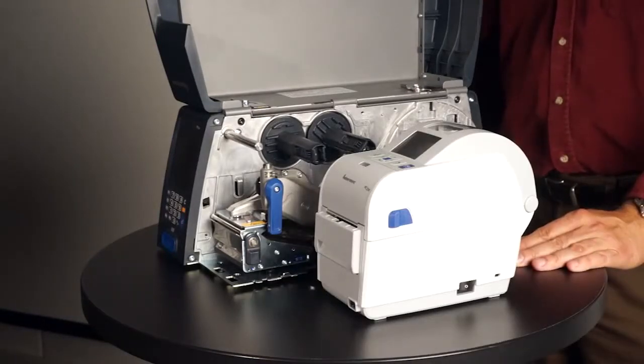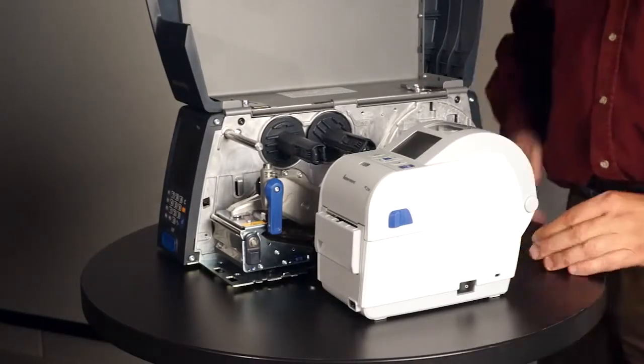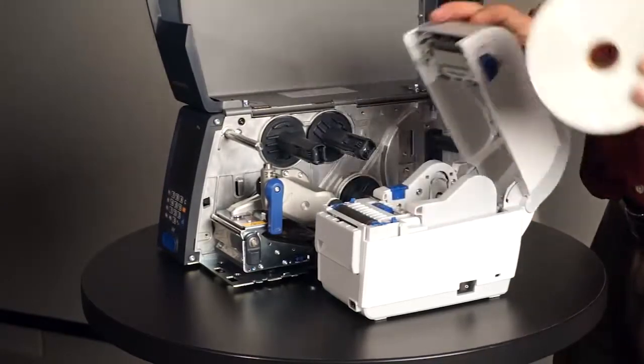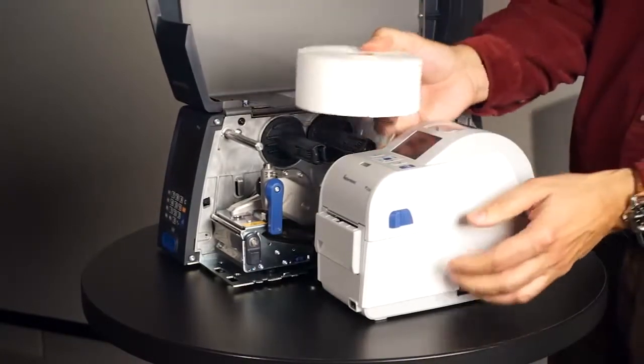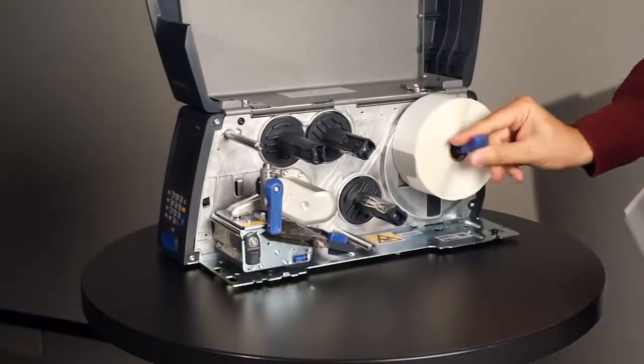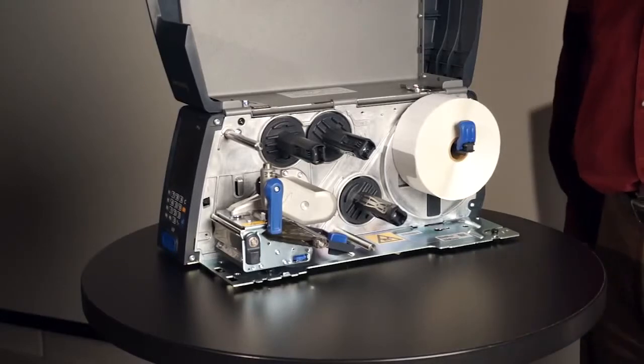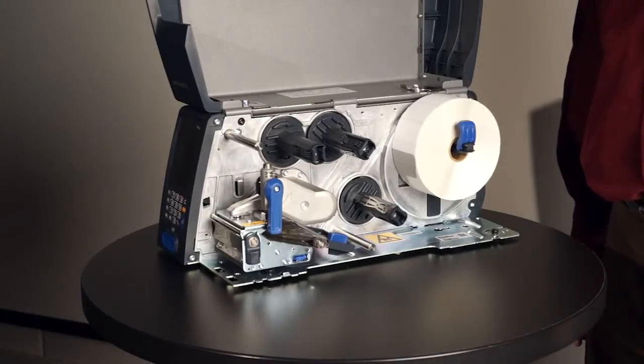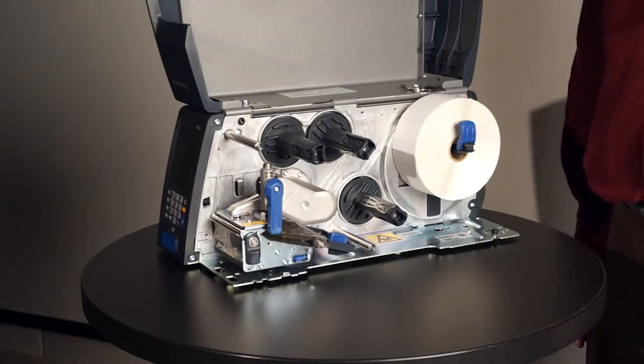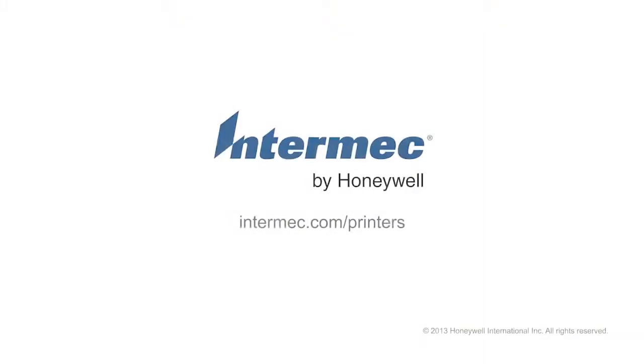If you want to standardize on the same type of media and size you are using on, let's say, your PC23 printer with a 1 inch media core on a PM23C, now you can do that. The PM23C will allow you to standardize on the same type of media whether you are using it for low volume office applications or high volume industrial applications.